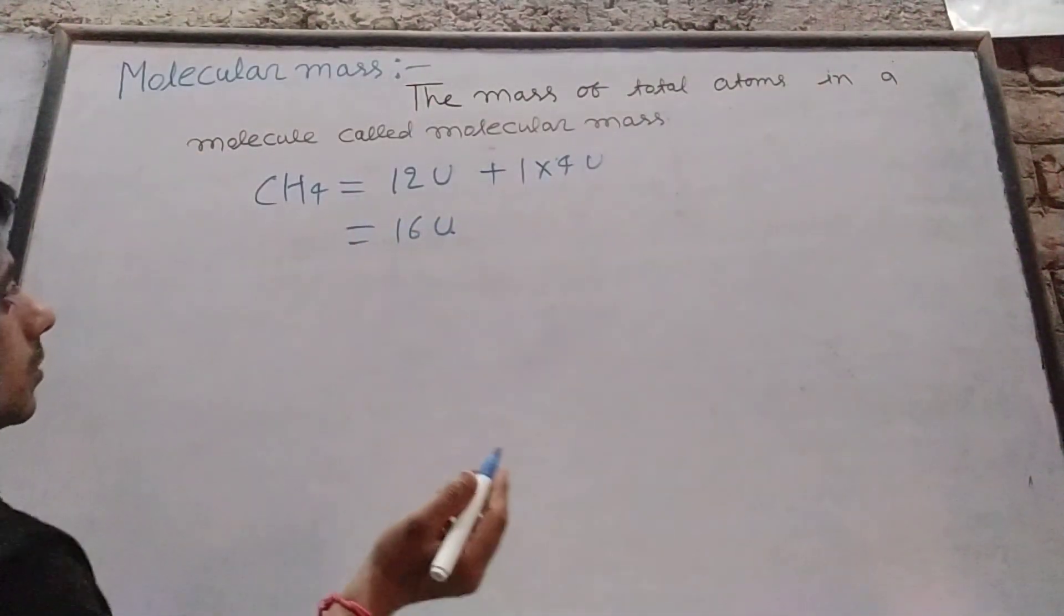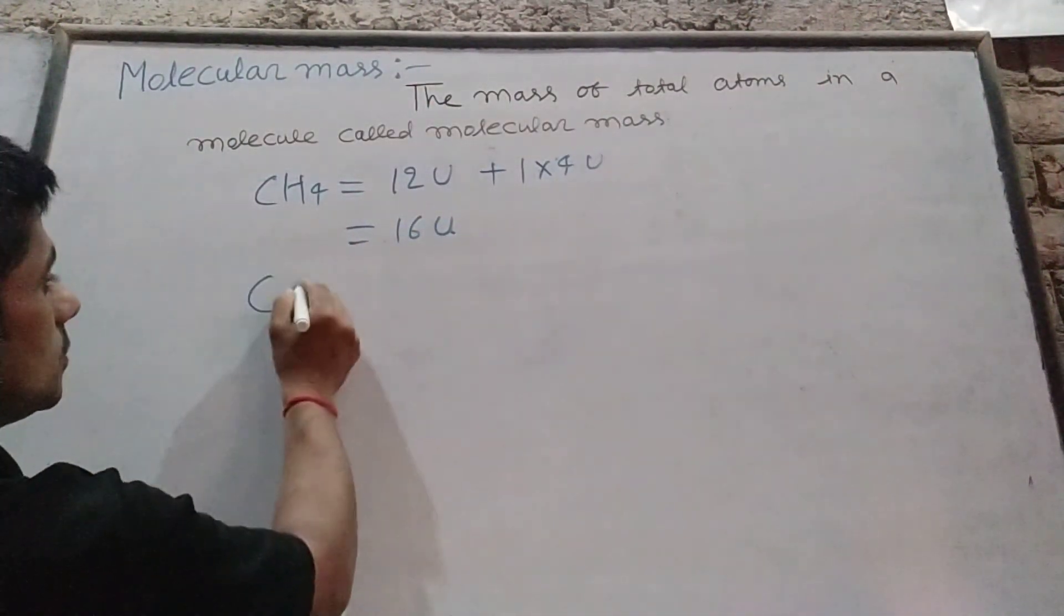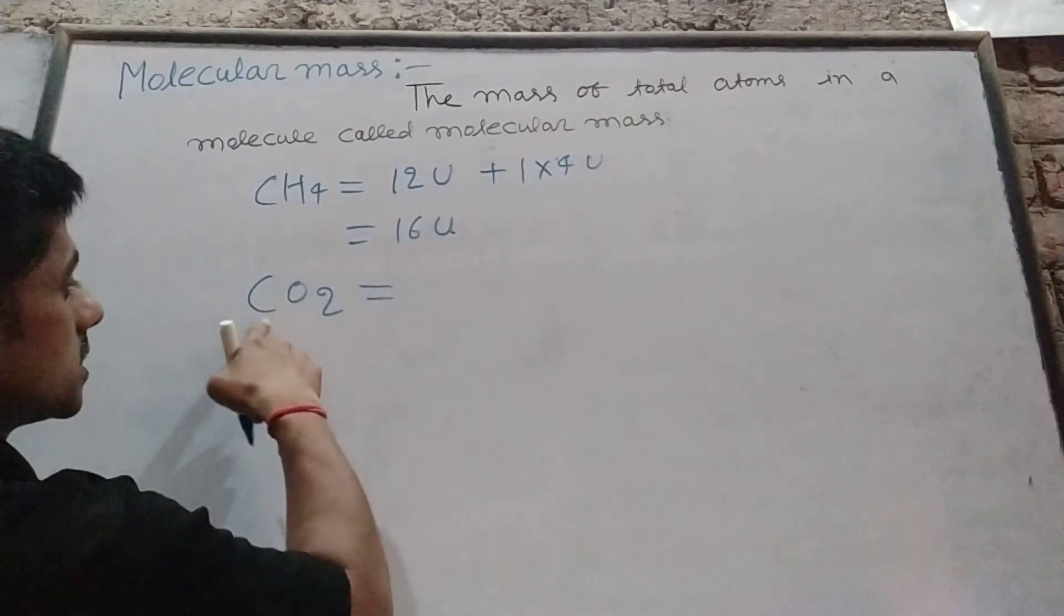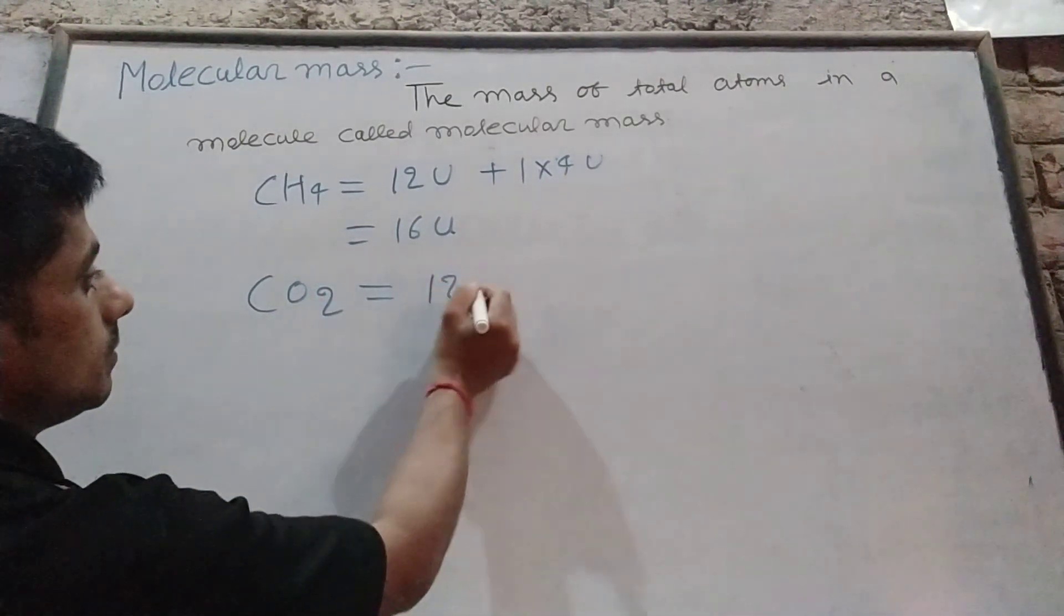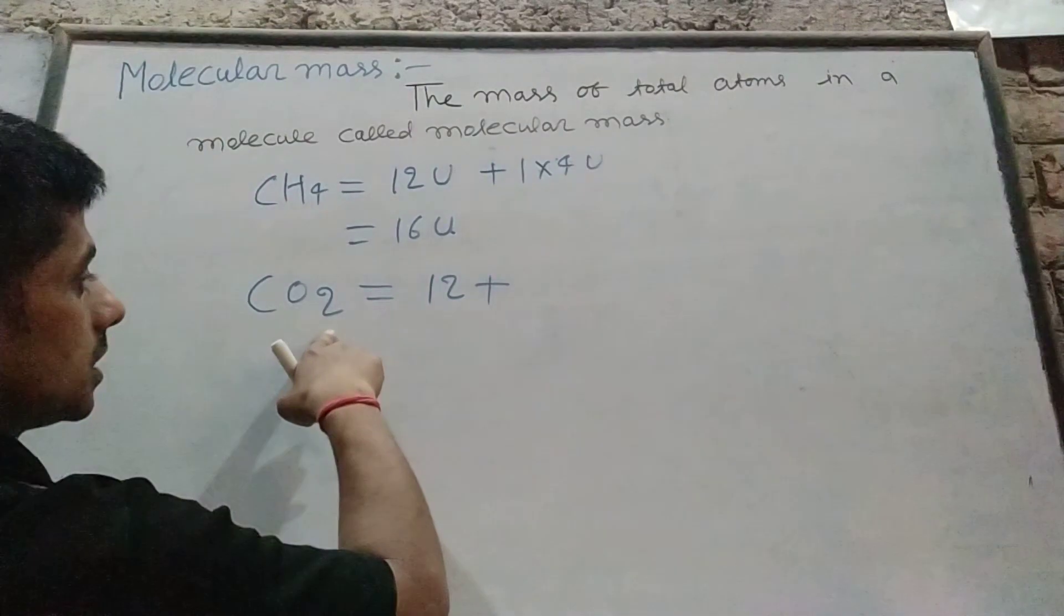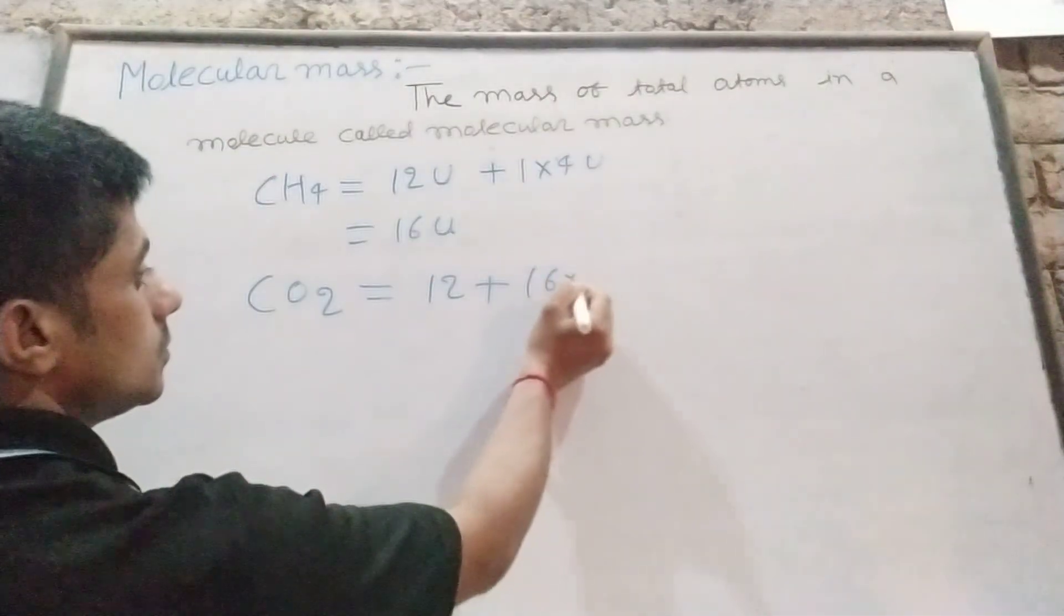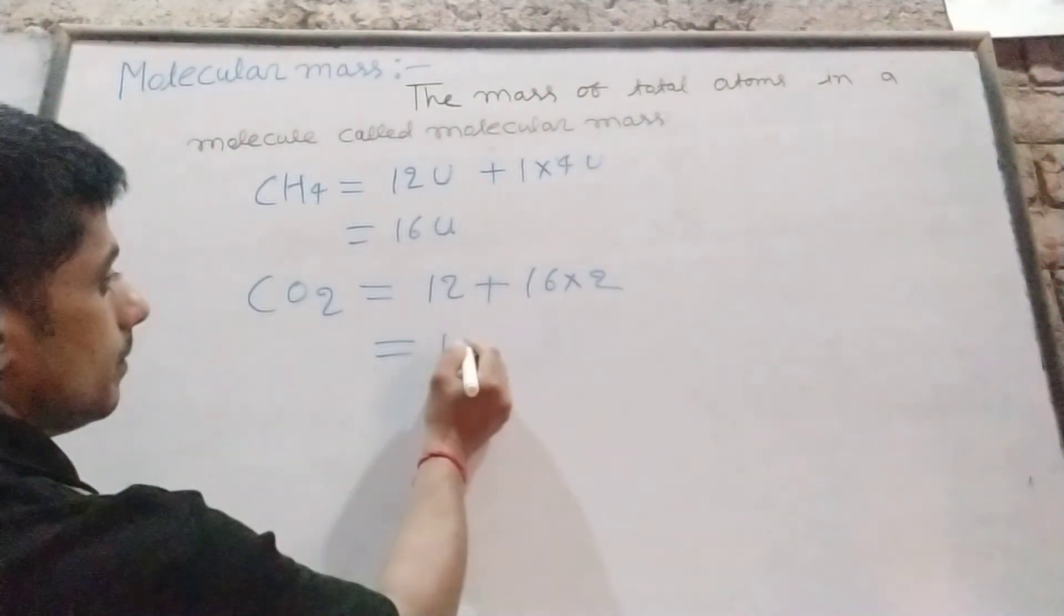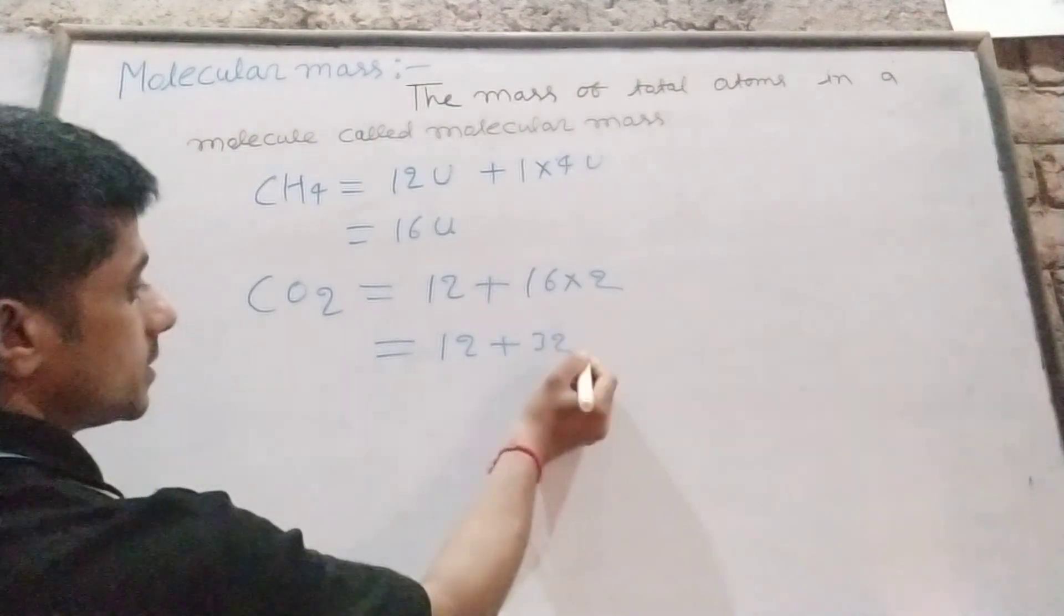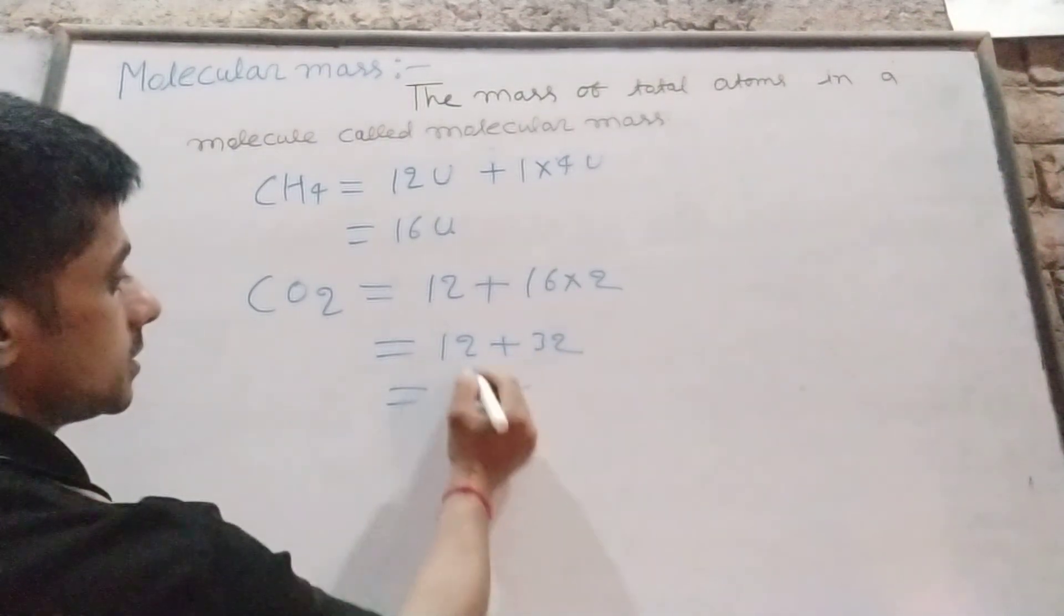For CO2, carbon dioxide, carbon is 12 U and oxygen is 16 U, which means 16 into 2. So 12 plus 32 equals 44 U. This is called molecular mass.